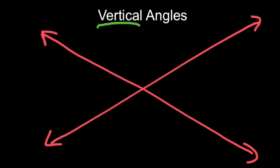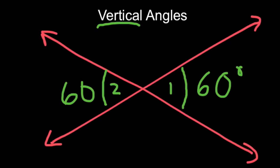And the two angles that are across from each other—so this angle 1 and this angle 2—they're across from each other. They're vertical angles. And why this is really cool is that if this one's 60 degrees, its vertical angle is 60 degrees also. They're always going to be congruent angles.